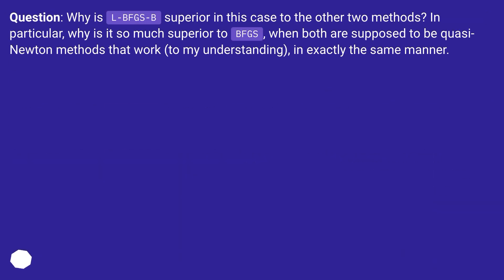Question: why is LBFGS-B superior in this case to the other two methods? In particular, why is it so much superior to BFGS, when both are supposed to be quasi-Newton methods that work, to my understanding, in exactly the same manner?